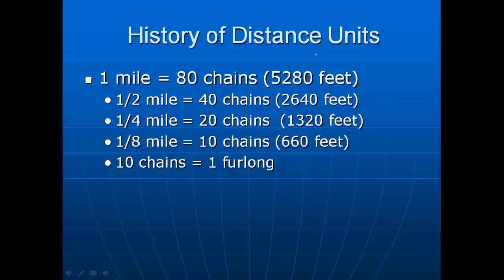The Gunter's chain was the basis for a mile. 80 chains laid end to end equals 80 chains times 66 feet per chain, which equals 5,280 feet. You can see the chain is the basis of the mile.